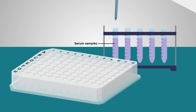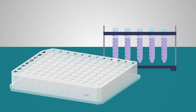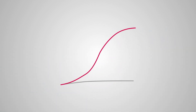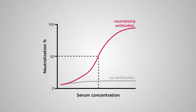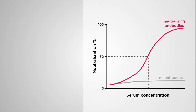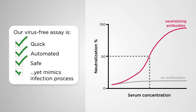Through the use of these VLPs in a lab setting, the method allows to both test and measure the concentration of neutralizing antibodies in the blood of vaccinated or infected individuals. This virus-free assay is quick, automated and safe, yet it mimics the full infection process.